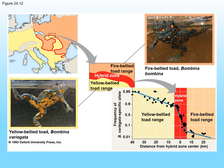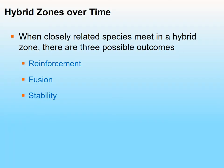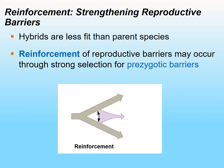There are three possible outcomes for a hybrid zone: reinforcement, fusion, and stability. When hybrids are less fit than the parental species — which is usually the case — reinforcement of prezygotic reproductive barriers can occur. The prezygotic barriers prevent the hybrids from remating with the parents, so the hybrid zone doesn't get maintained and decreases over time, eventually disappearing.